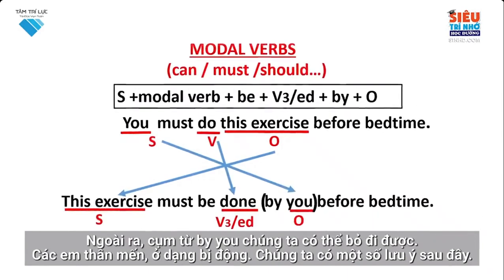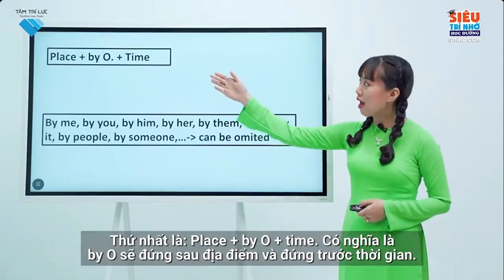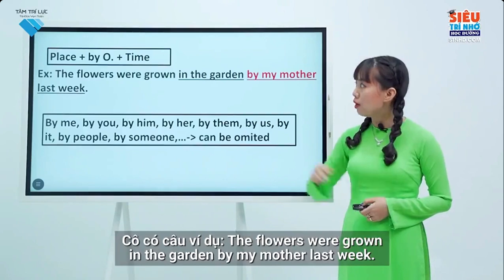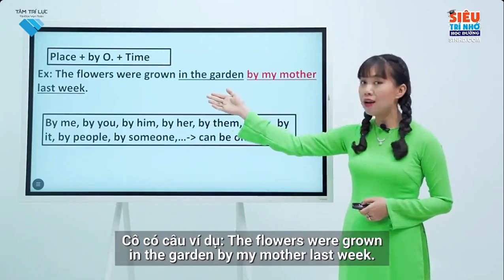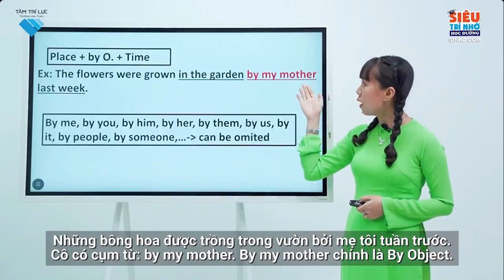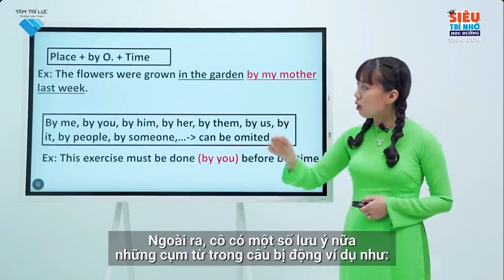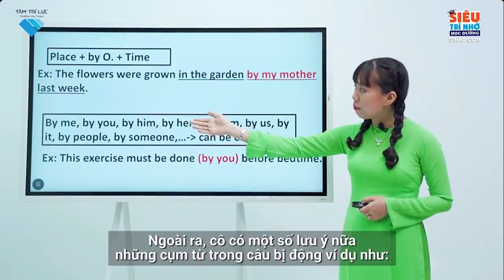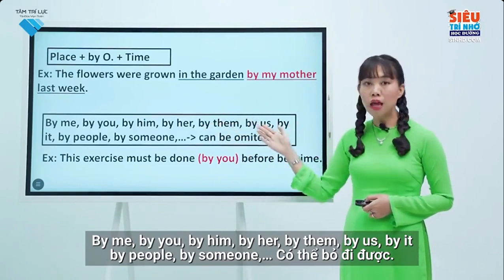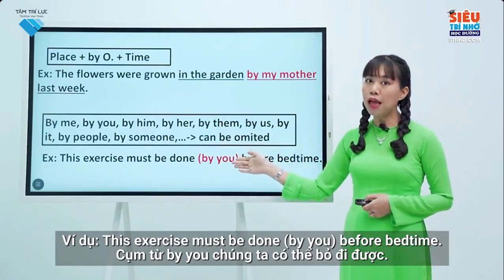Besides, we can eliminate the phrase 'by you.' In passive sentences, I have some notes. First, the order is: place + by + object + time — meaning 'by object' stands behind the location and in front of the time. For example: 'The flowers were grown in the garden by my mother last week.' Also, phrases like 'by me, by you, by him, by her, by them, by us, by it, by people, by someone,' etc., can be eliminated.